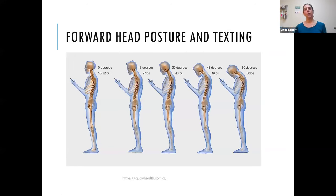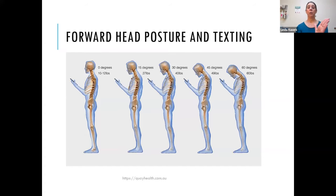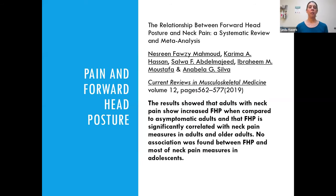The idea is that in good posture, muscles are as close to rest as they can be and don't have to work as hard. I also included a slide on forward head posture and texting — at 60 degrees of head tilt, the muscles counteract about 60 pounds of force. A systematic review found that adults with neck pain had increased forward head posture compared to asymptomatic adults, though again it's a correlation, not necessarily cause and effect.